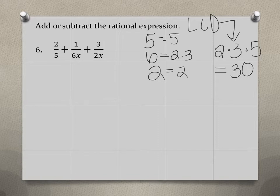Now, two of these denominators have an x in them. So our least common denominator needs to also include an x. And so basically 30x is the least common multiple between 5, 6x, and 2x.